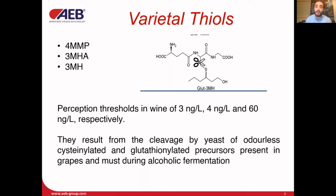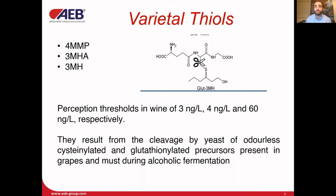3MH can then be further metabolized to form the acetate 3MHA. The quantity of thiols present in wines depends on the quantity of precursor present in grape and must, which varies depending on multiple factors. Over the years, the presence of these compounds was reported in wine, but their role and especially the sensory characteristics they express are not yet completely understood, because of the difficulties involved in their analytical determination.